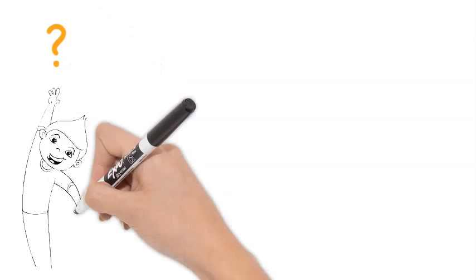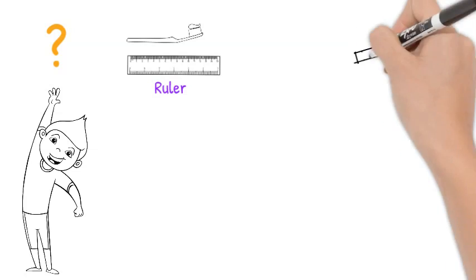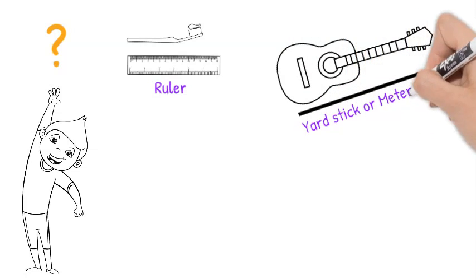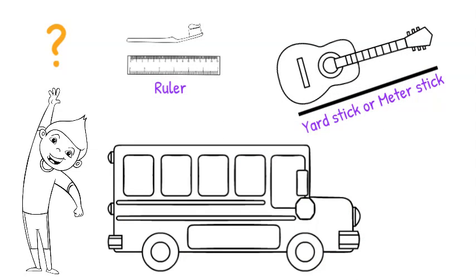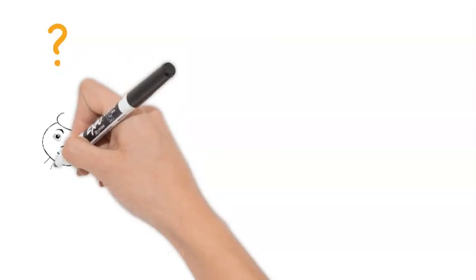What tool would be appropriate for measuring a toothbrush? A ruler, right! How about a guitar? A yardstick or meter stick. What about a school bus? Measuring tape! Well done! Are you ready for one more question?